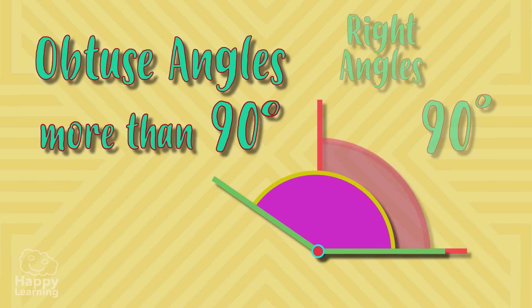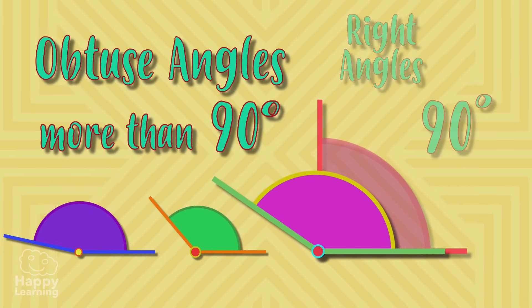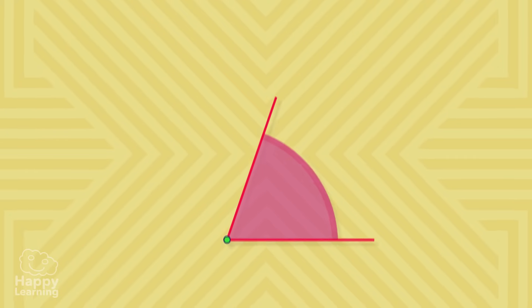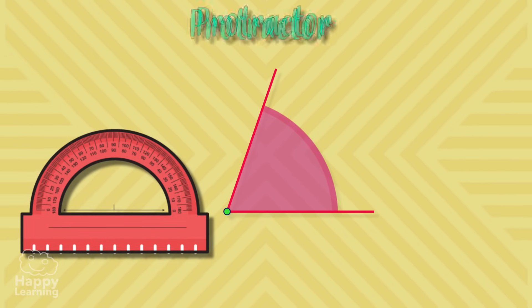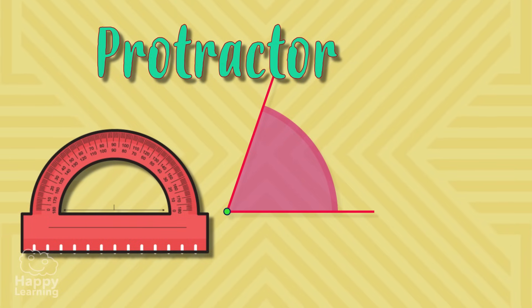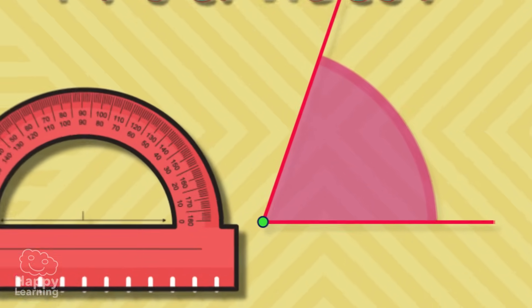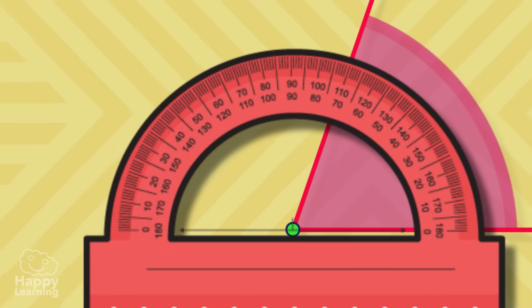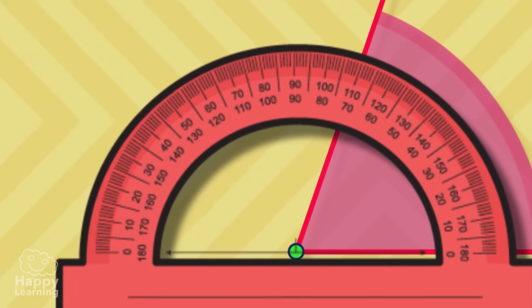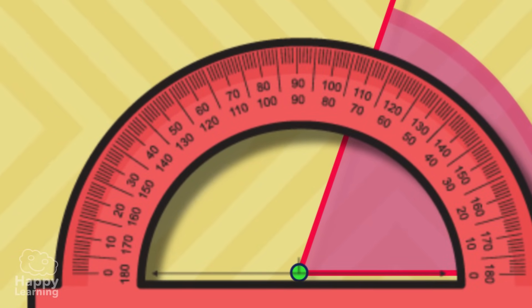To know the degrees that an angle measures we need to use this instrument which is called a protractor. So we need to place the straight part of the protractor over one of the sides of the angle making the vertex and the central point of the protractor meet. After this we need to look at the tractor line on the other side of the angle and look at what number it says. These are the degrees that an angle measures.